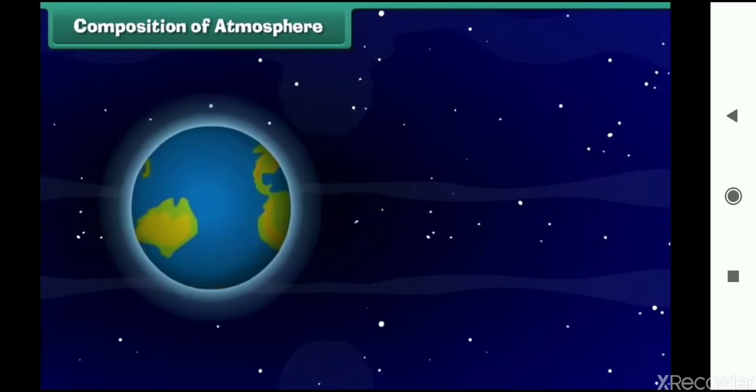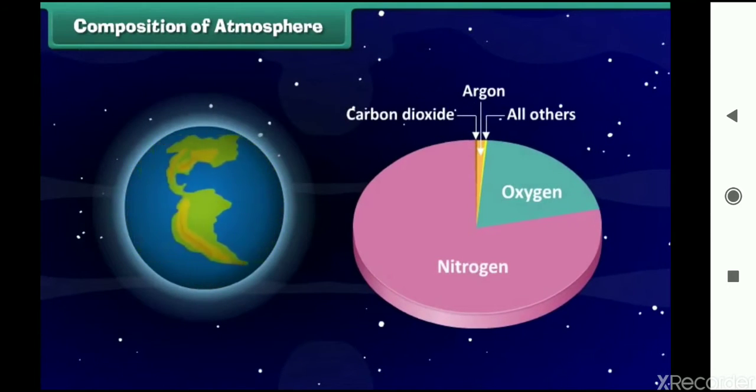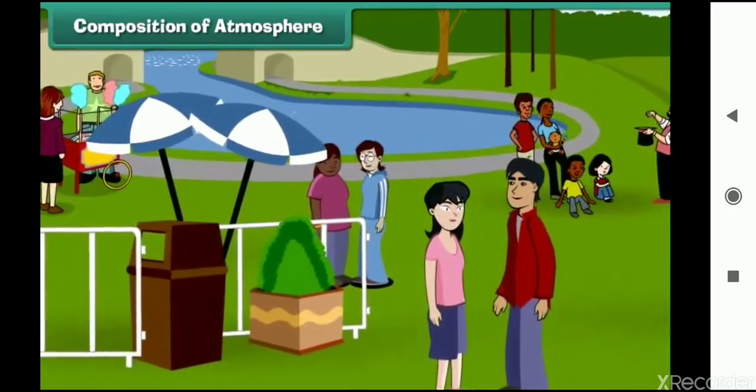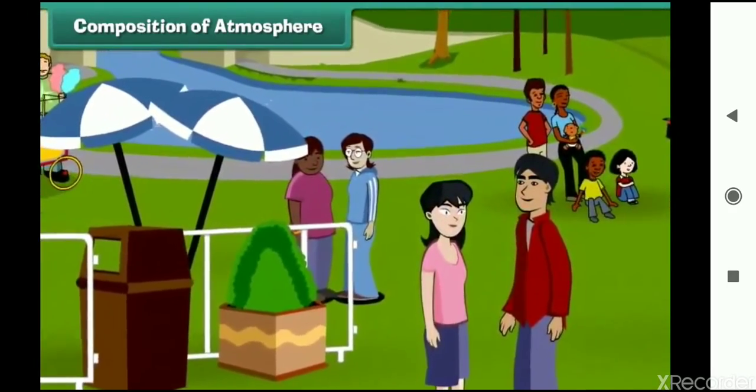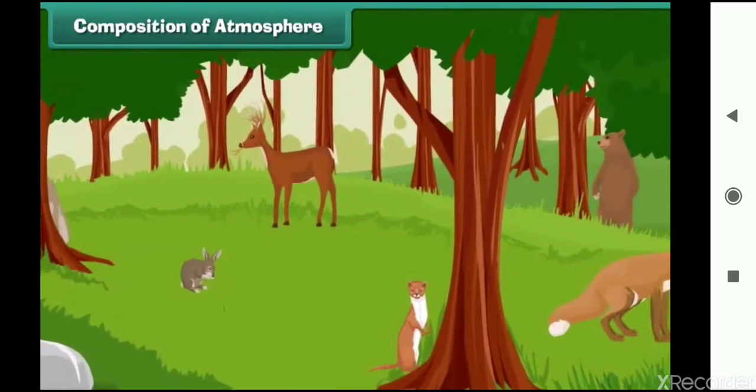The atmosphere is made up of a mixture of gases, primarily nitrogen and oxygen, that wrap around the earth like a blanket. Without the atmosphere, we would not be able to live here. It protects us from the dangerous rays coming from the sun and makes earth a perfect habitat for plants and animals.